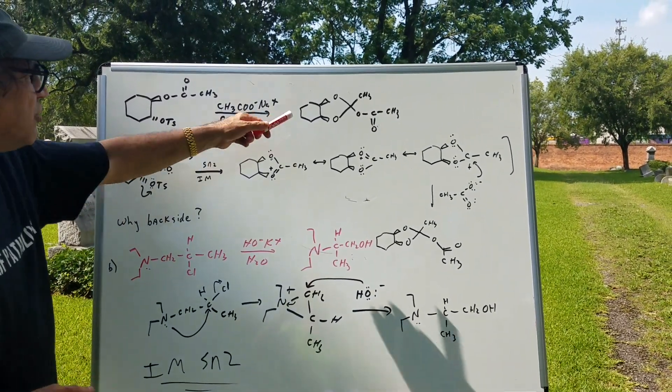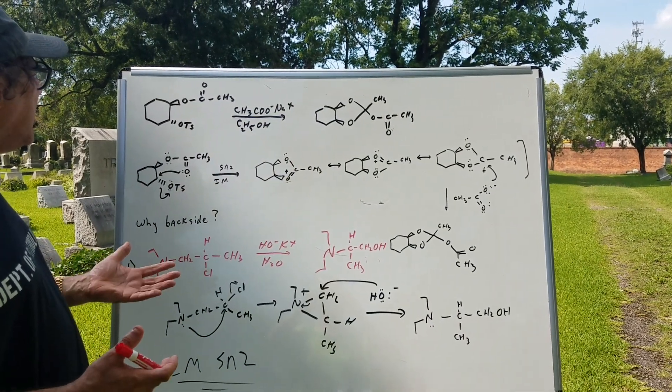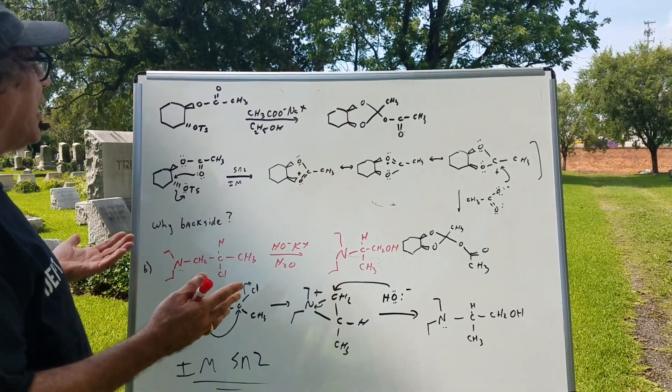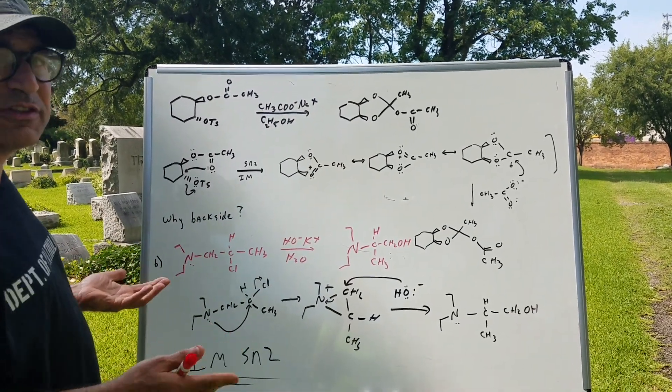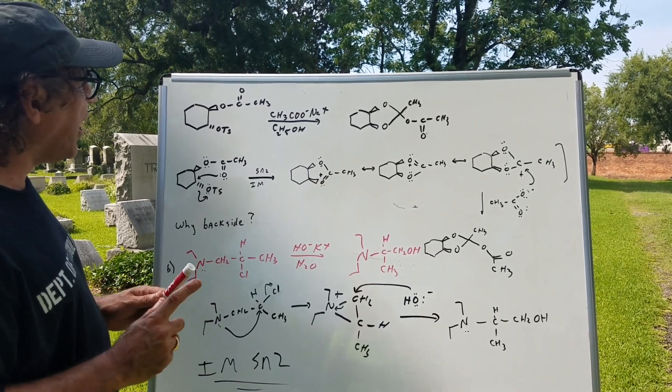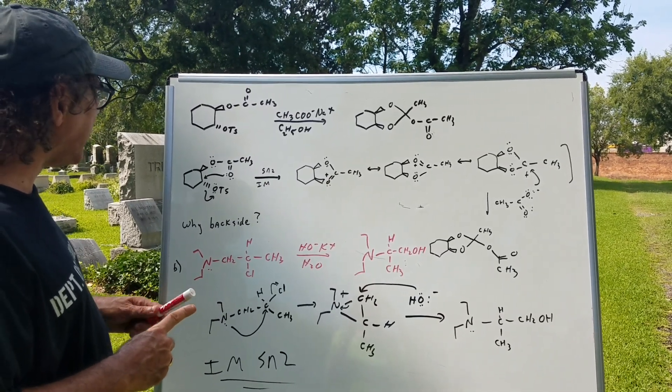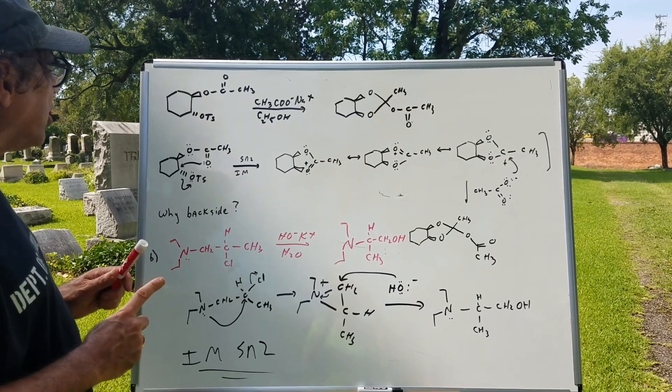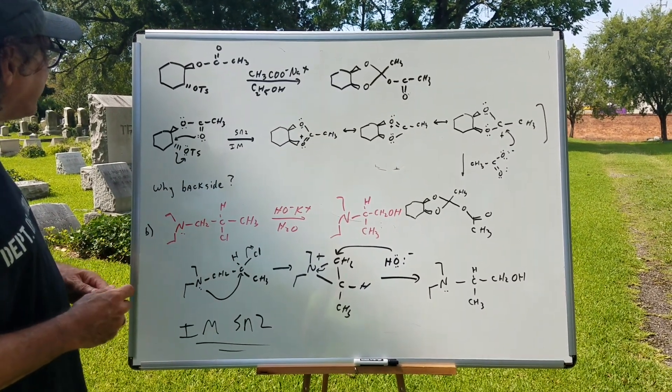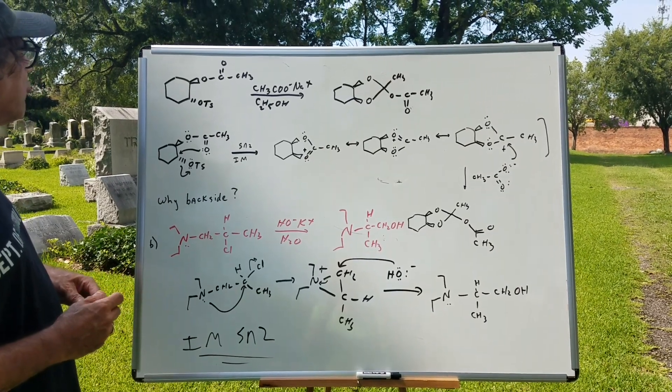Now, any time you see a result like this, if you didn't know better and you simply did an SN2 attack, you would not get this product. Now, you look at this and you say to yourself, this looks awful weird. Any time something looks weird, entertain the possibility of what we call an SN2 intramolecular rearrangement. So what we're going to do is take a look at this SN2 intramolecular rearrangement.